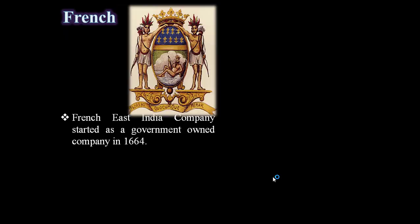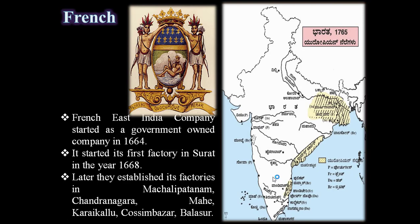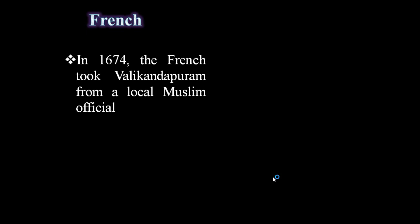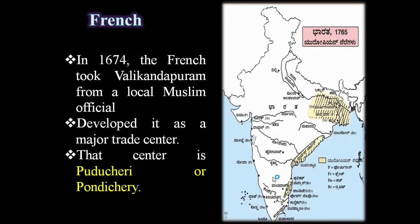The next European trade company is the French. The French East India Company started as a government-owned company in 1664. It started its first factory in Surat in the year 1668. Later, they established factories in Masulipatnam, Chandernagore, Mahe, Karaikal, Kasimbazar, and Balasore. In the year 1674, the French took Valikondapuram from local Muslim officials and developed it as a major trade center.